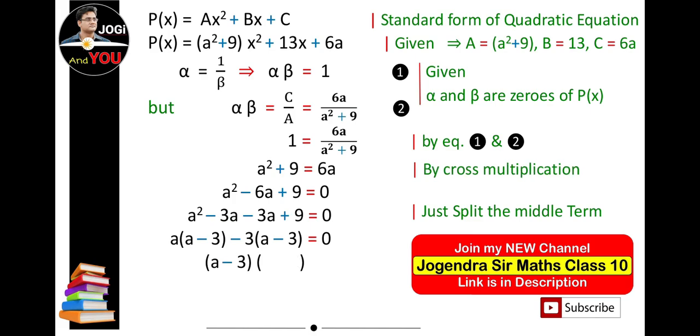Both terms have (a - 3) as common. Taking (a - 3) as common, we get (a - 3)(a - 3) = 0. By equating both brackets equal to 0, we get a = 3 and again a = 3. Finally, a = 3 is the answer.